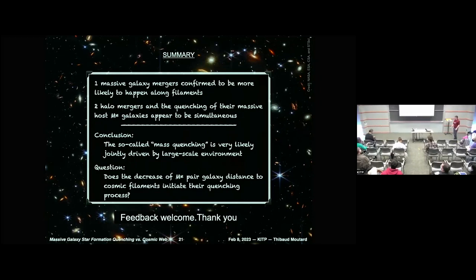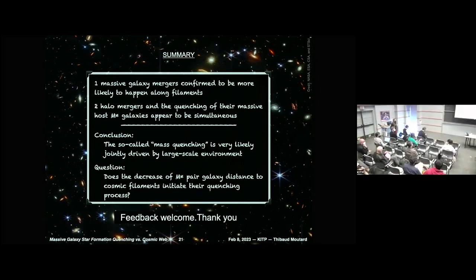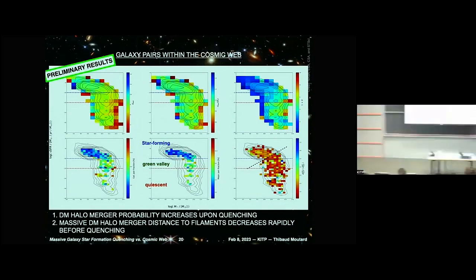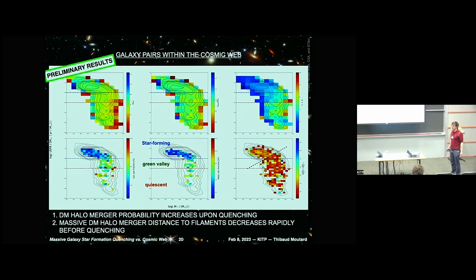Comment: So what matters is the merger itself, not proximity to filaments? Response: It seems you need both. You can see an effect on average, but the evolution is smooth — there is no sharp break — so I cannot say that distance alone is sufficient for quenching. You need the distance plus something else, and that may be the merger of fairly comparable-mass halos.